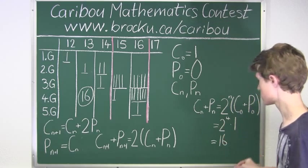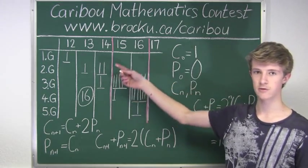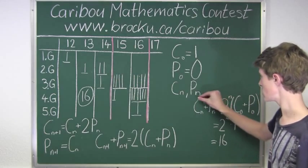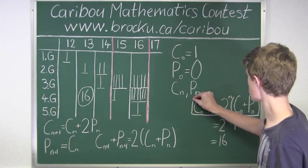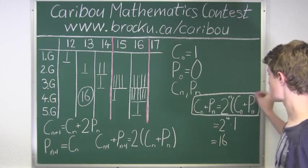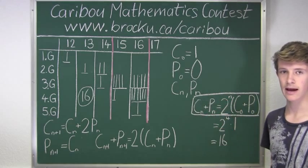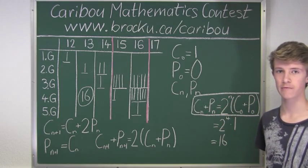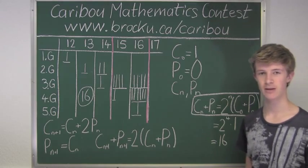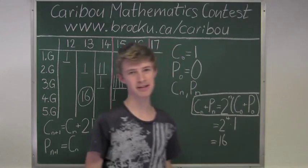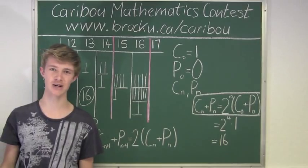As you can see, we achieved the same answer of 16 using both methods. This formula can be applied to any number of hours and any initial number of child Blorbs and parent Blorbs. If you would like to know more about this contest, please feel free to visit our website at www.caribou.ca/caribou.